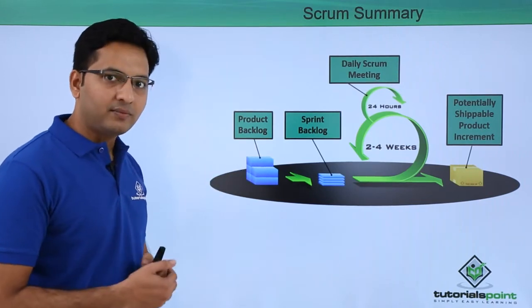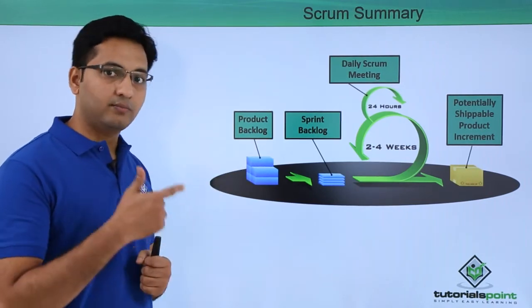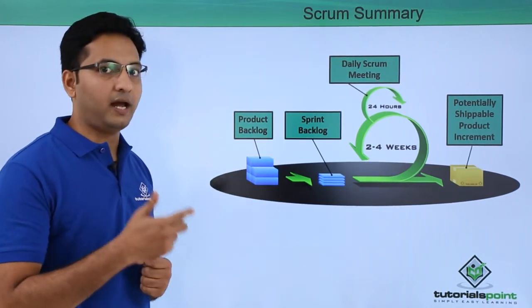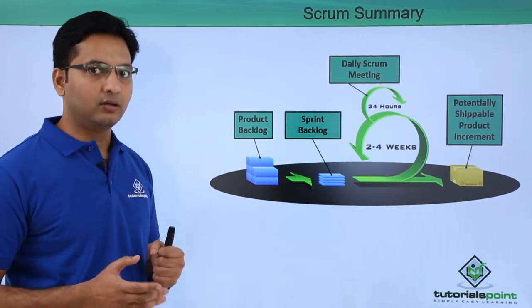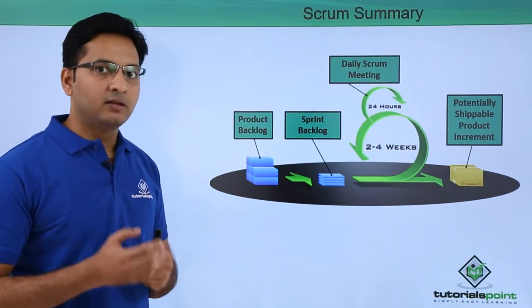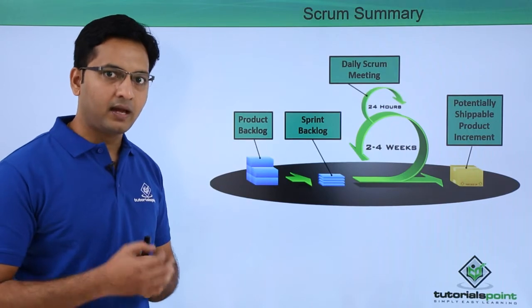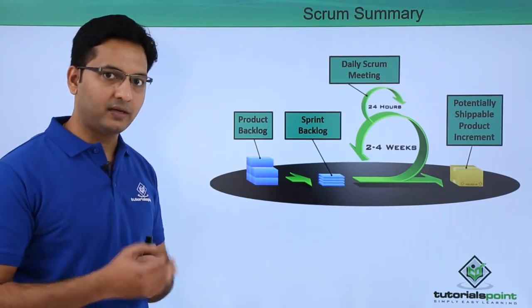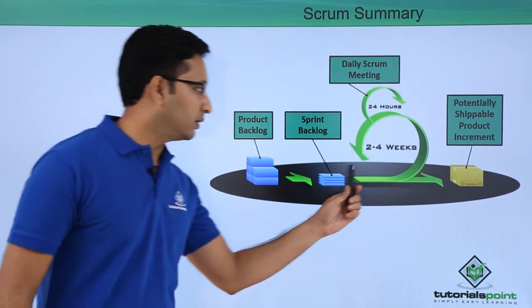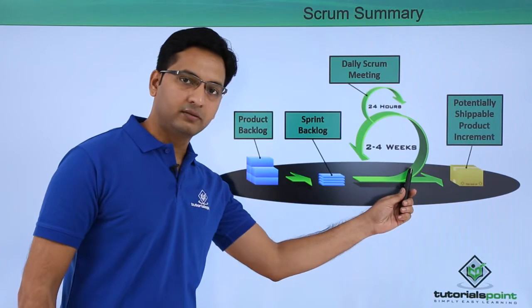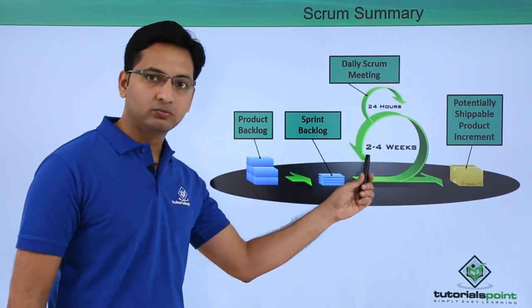When there is a product backlog, the Scrum team — including the Scrum Master, Product Owner, and the development team — gathers together in the sprint planning meeting. At the end of the sprint planning meeting, the team decides on the sprint, which can be for two to four weeks.